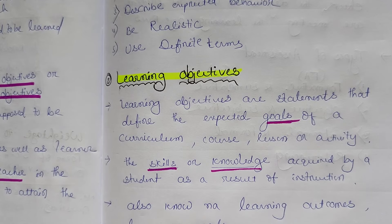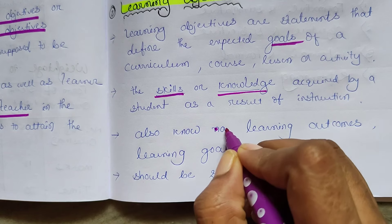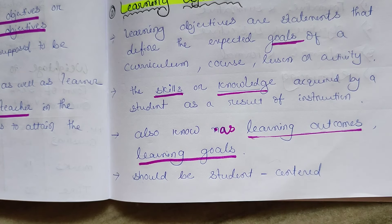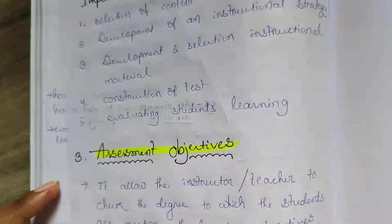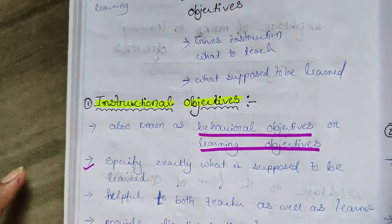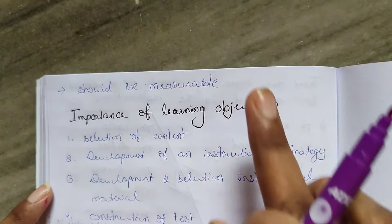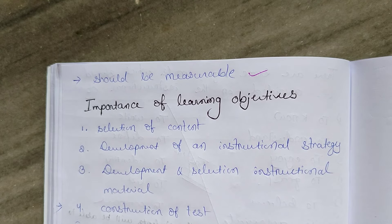Learning objective refers to the skill or knowledge acquired by a student as a result of instruction. It is also known as learning outcomes or learning goals. Learning objective is student-centered and it is measurable — unlike instructional objective, which is not measurable. We can measure how much knowledge a student has gained.